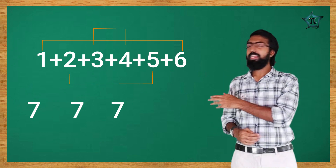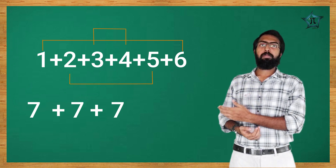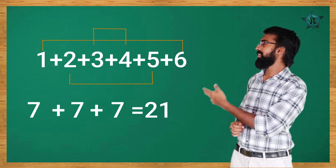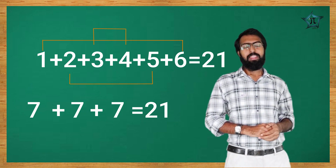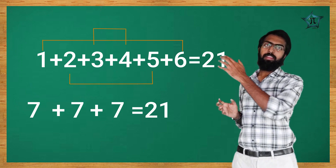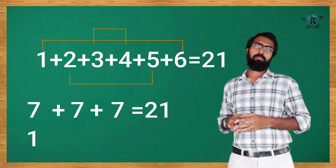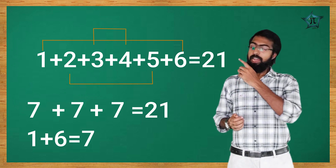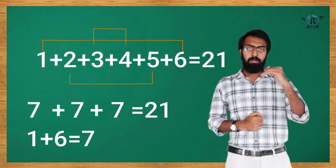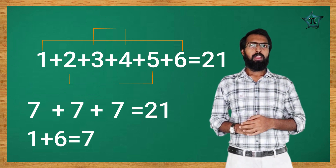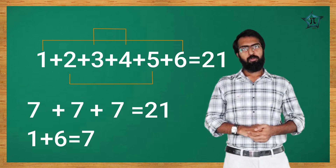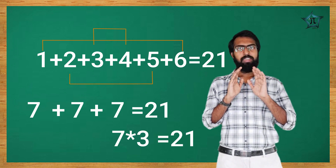For example: 1 plus 2 plus 3 plus 4 plus 5 plus 6 equals 21. There is an easy method. First term plus last term equals 7, and there are 6 total terms, so 6 divided by 2 is 3. Then 3 multiplied by 7 equals 21. That is the total sum.